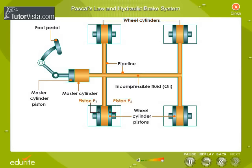The wheel cylinder has two pistons, P1 and P2, attached to the brake shoes. The area of cross-section of the wheel cylinder is greater than the area of the cross-section of the master cylinder.